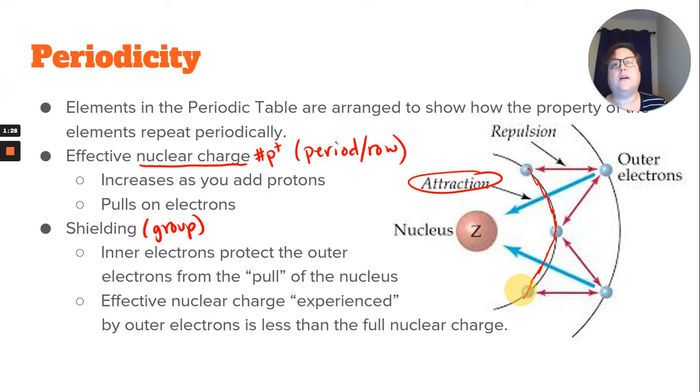So when you come across a question that's asking about the trends and comparing elements, you really have to be careful about your word choice. You want to use effective nuclear charge if they're within the same period or row, or shielding if we're talking about them in the same group.